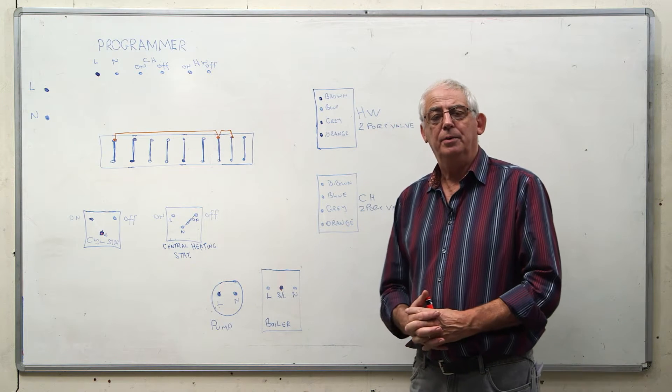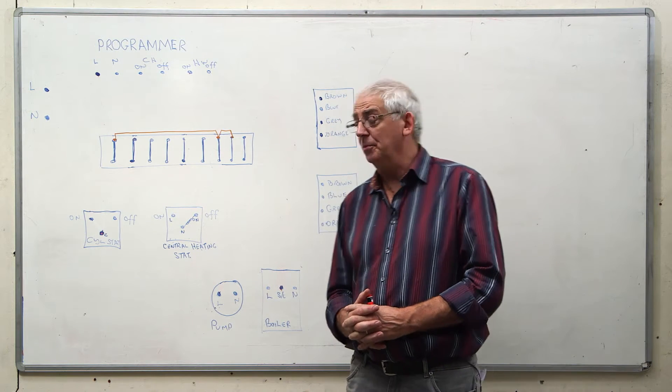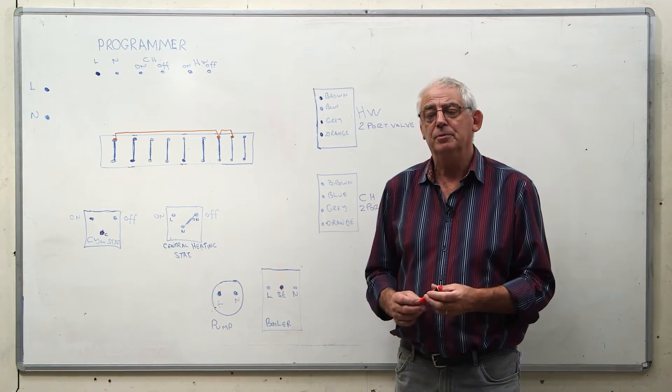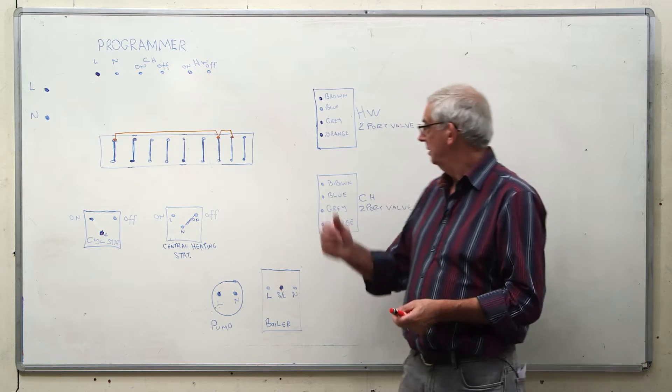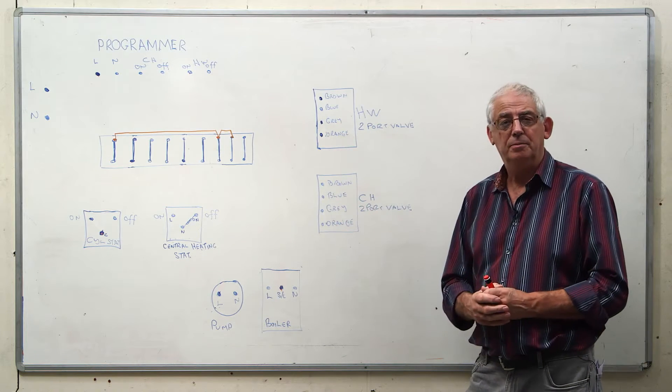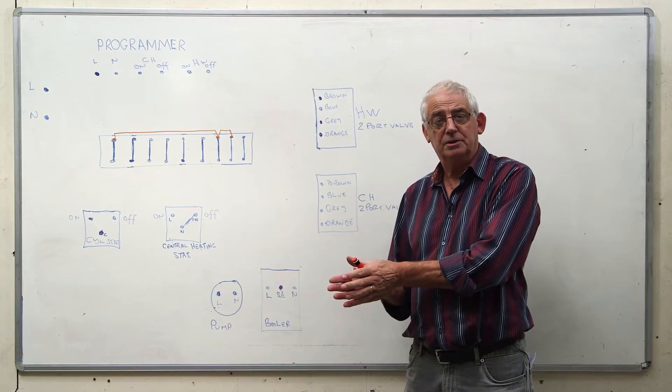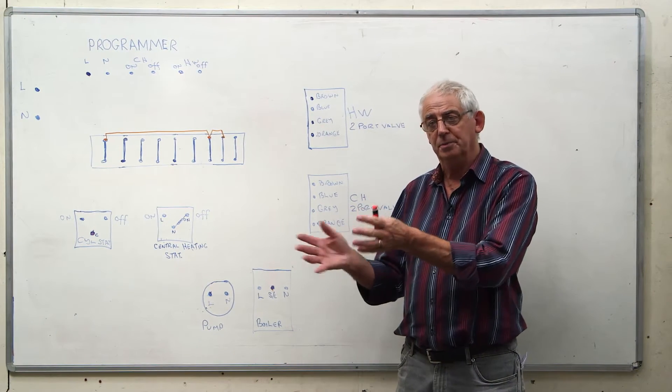I'm going to describe how to wire up a central heating system. The one we're looking at today is an S-Plan. An S-Plan would consist of two two-port valves, both of them are spring loaded so that when they've got current to them they'll open and when the current disappears they'll close.